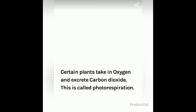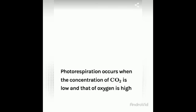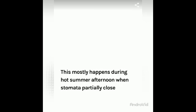Certain plants take in oxygen and excrete carbon dioxide. This is called photorespiration. Photorespiration occurs when the concentration of carbon dioxide is low and that of oxygen is high. This mostly happens during hot summer afternoons, when stomata partially close.